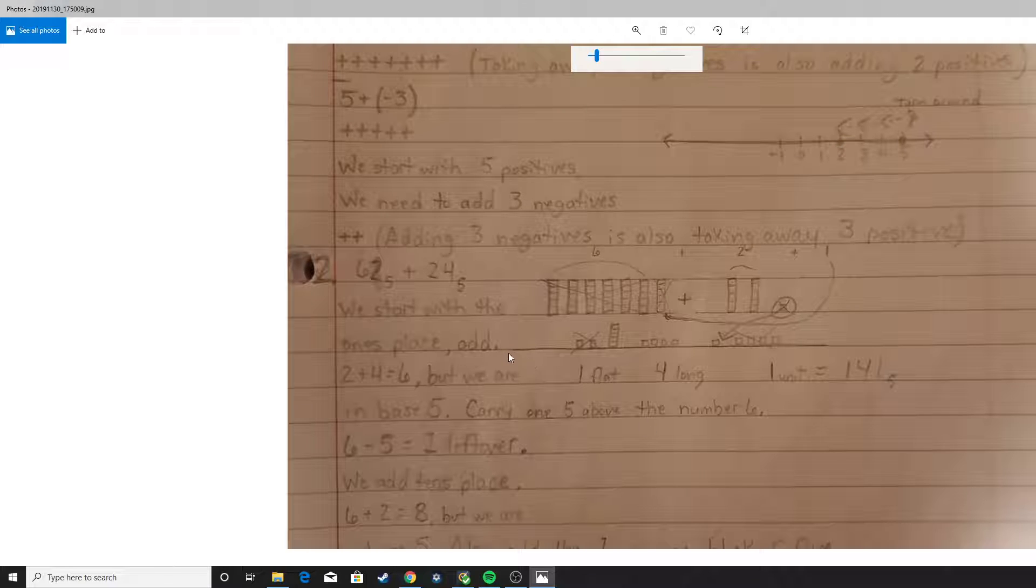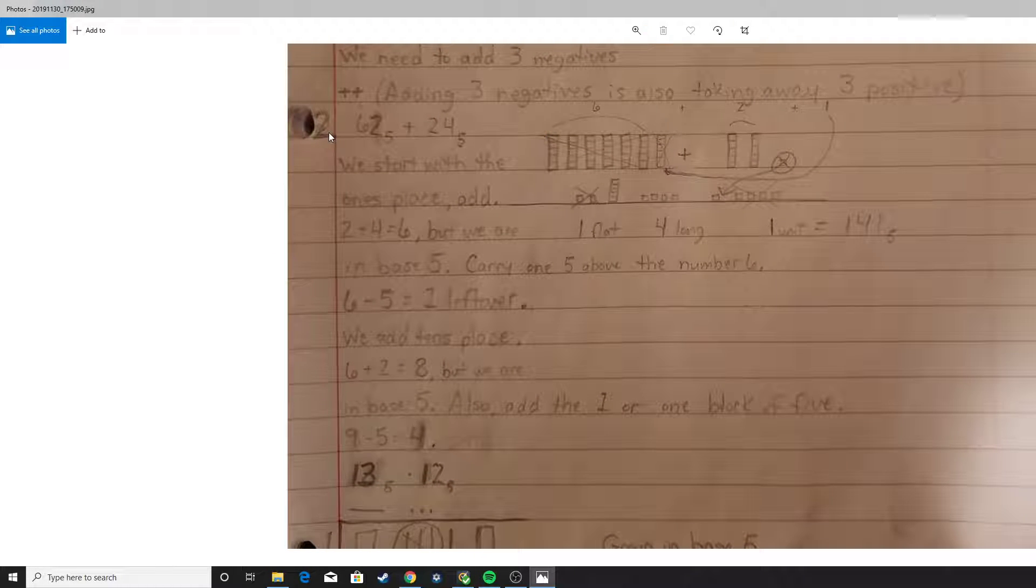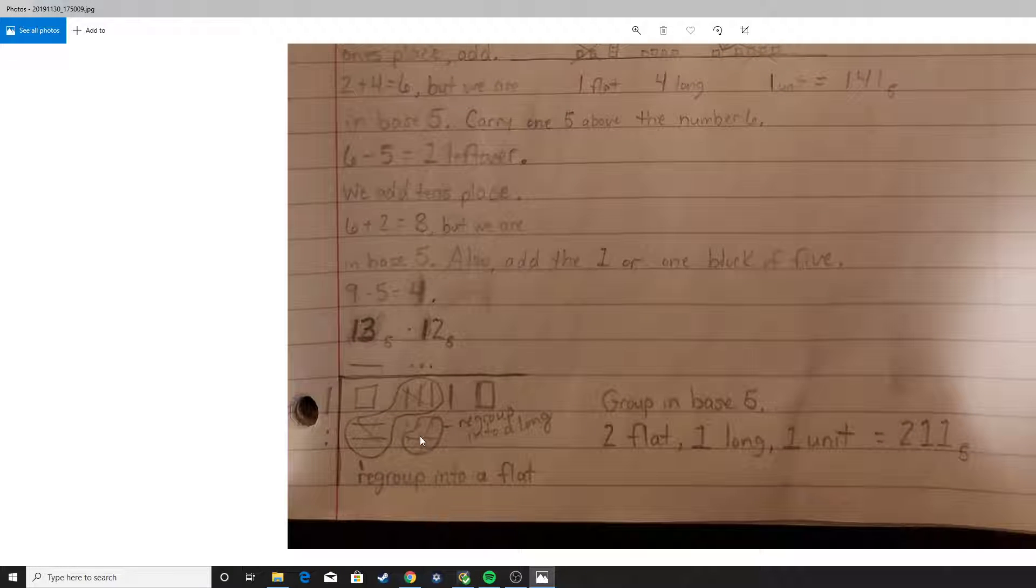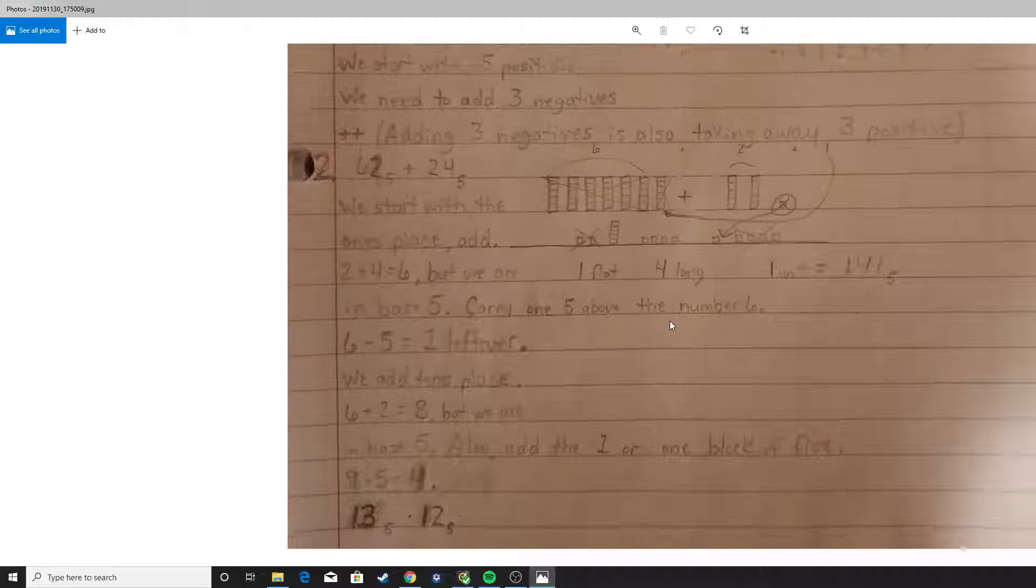We'll go on to another question here. We have 62 base 5 plus 24 base 5. What the question reads is, use base 5 blocks to model addition and multiplication in base 5. So what I did for this problem is I modeled it using a method of using base blocks. But it's another method. I have seen this once. I've done this before. It might be not as easy to understand, but I do have another example with another problem down here using base blocks that might be easier to see, and it's kind of a table.